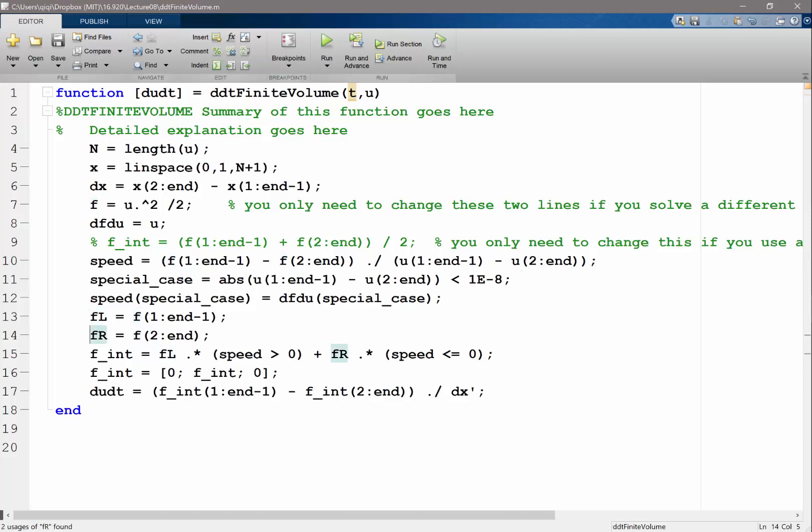What you have is f is always equal to half, right? And fl and fr is always equal to half. And if I didn't have that bug, then f interface is also always equal to half.